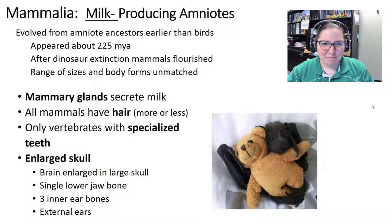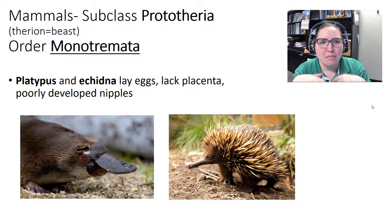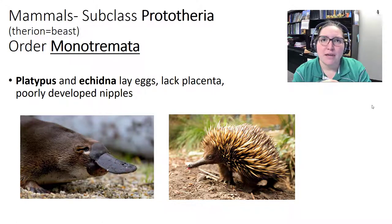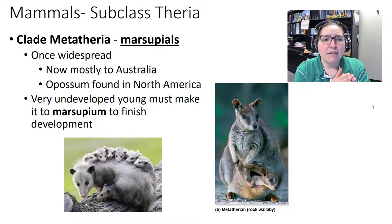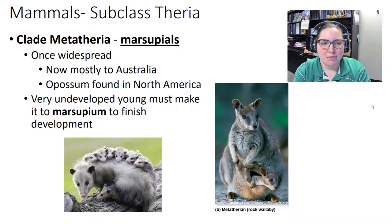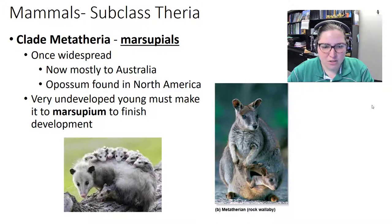Mammal subclasses: Subclass Prototheria, order Monotremata — the egg-laying mammals. Platypus and echidna lack a placenta and have poorly developed nipples. Subclass Theria, clade Metatheria — marsupials. Once widespread, now mostly found in Australia, though the opossum exists in North America. Young are born immature and crawl to the marsupium (pouch) to finish development.